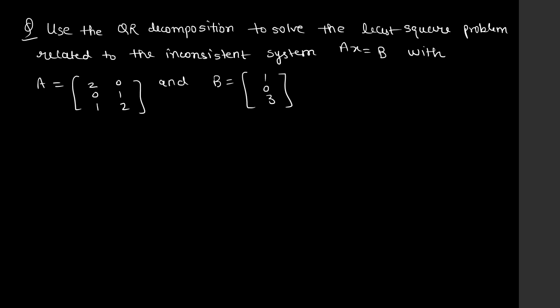We have to find the value of x using the formula Rx = Q^T b. Here x is the solution itself. R and Q can be found using QR decomposition, and b is given. We start with the Gram-Schmidt orthogonalization process. What you have to do is split matrix A into columns. You can see there are two columns — let's call them v1 and v2. v1 is [2, 0, 1] and v2 is [0, 1, 2].